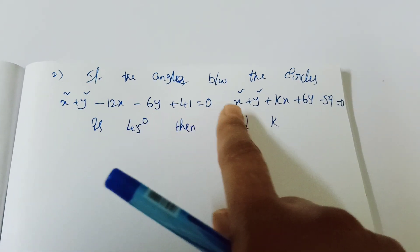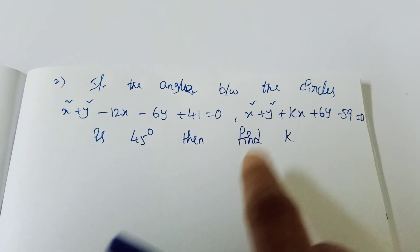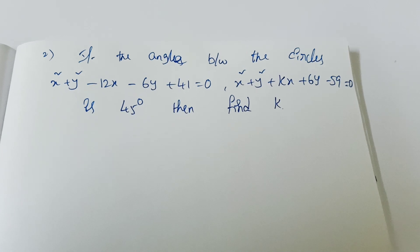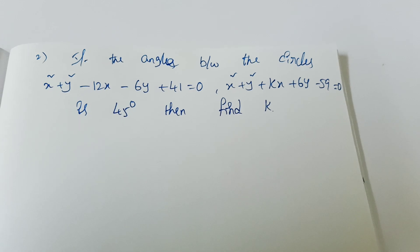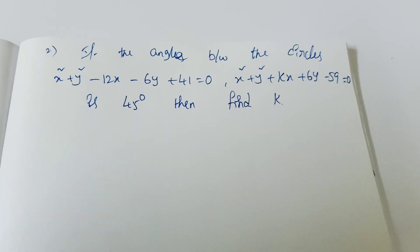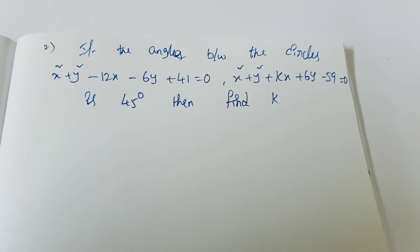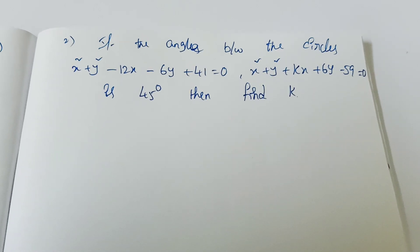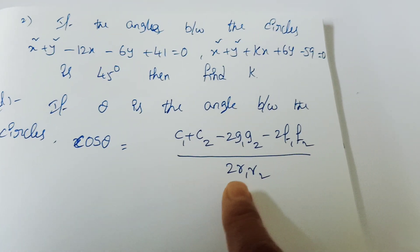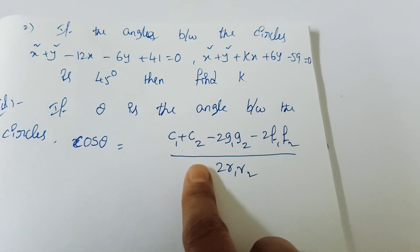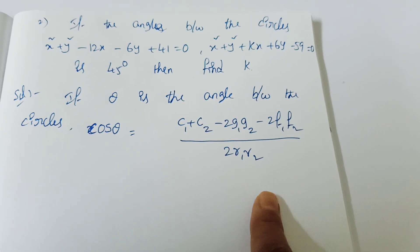The next question: if the angle between two circles is 45 degrees, find the value of k. Here we have two circles intersecting at an angle, and we need to find an unknown k. When finding the angle between two circles, the formula is: cos θ equals (c1 + c2 − 2g1g2 − 2f1f2) divided by (2r1r2).